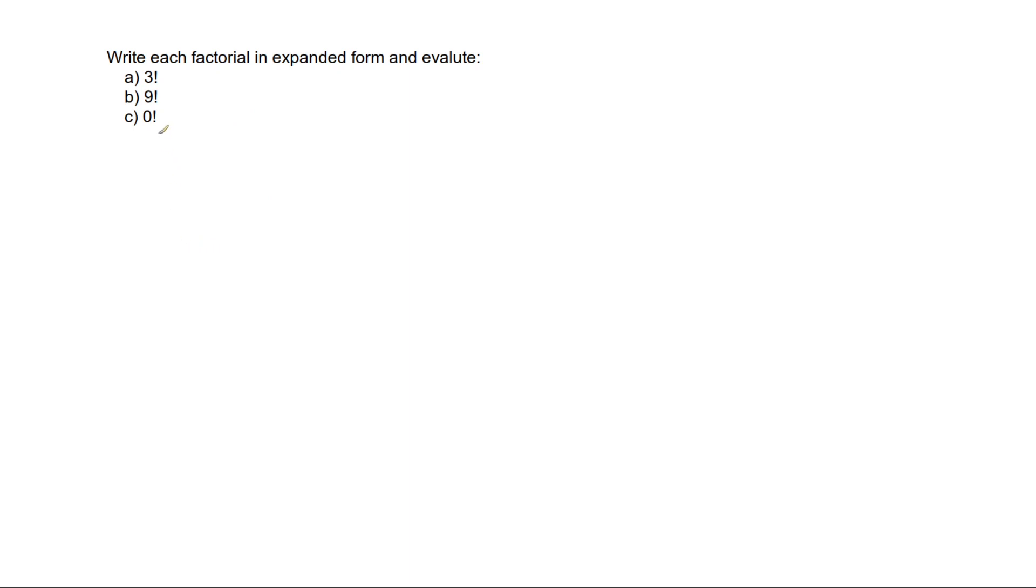So I've got 3 factorial, 9 factorial and 0 factorial. Now a factorial is defined as from the number that you're starting off with, work your way down in increments of 1 until you reach 1 and multiply all the numbers.